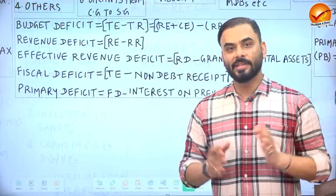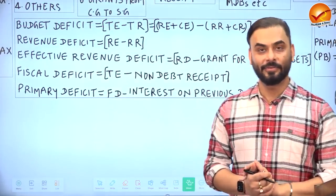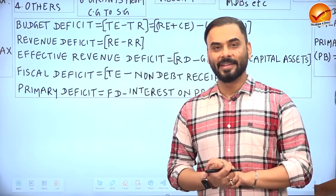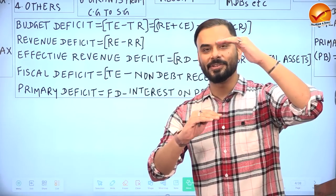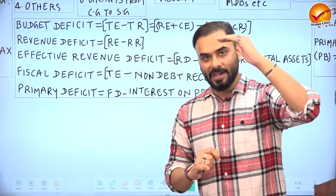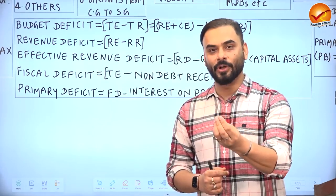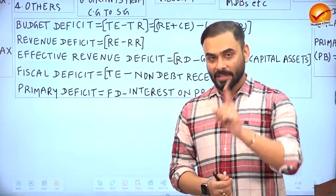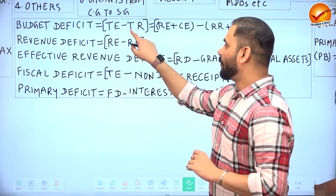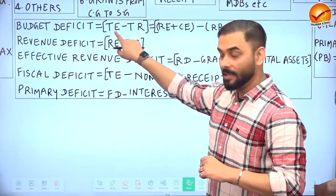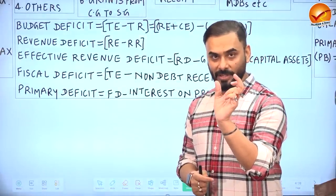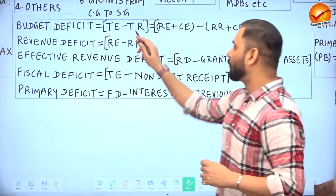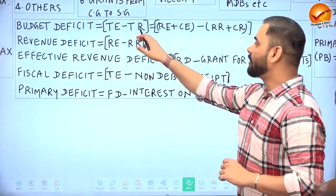The ideal scenario for any government is that total income should be greater than total expenditure. But most of the time, expenditure exceeds income — this shortfall is called a deficit. Deficits are not desirable and governments try to minimize them. The first type is budgetary deficit: total expenditure minus total revenue, where total expenditure equals revenue plus capital expenditure, and total revenue equals revenue plus capital receipts.